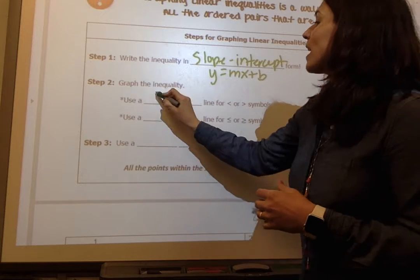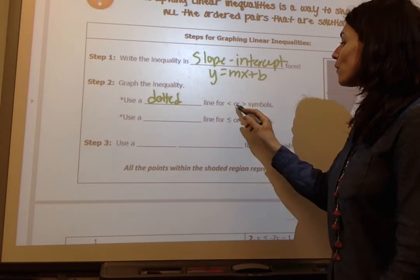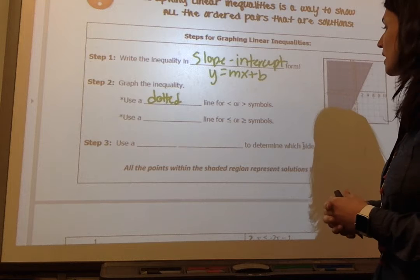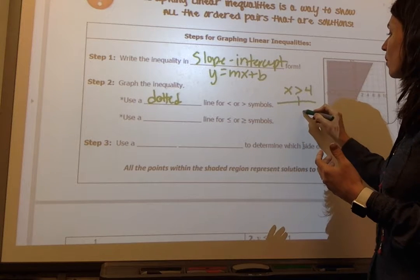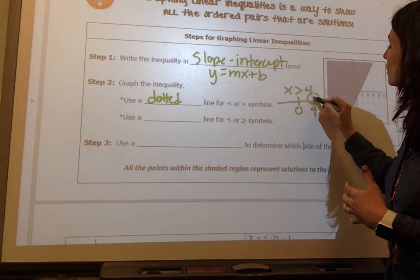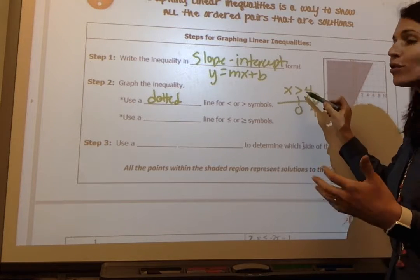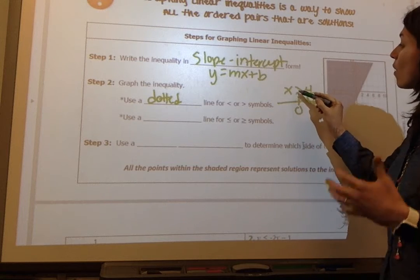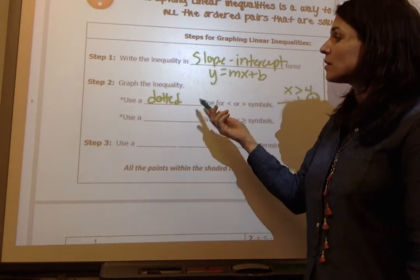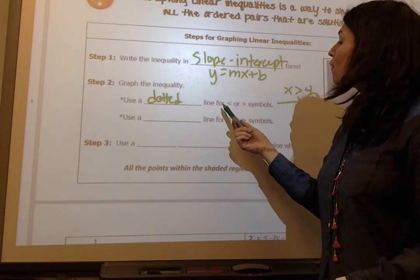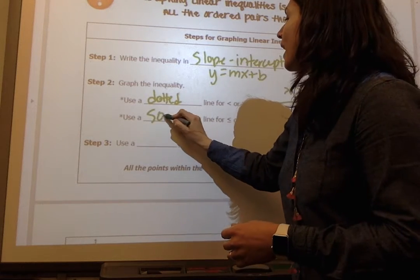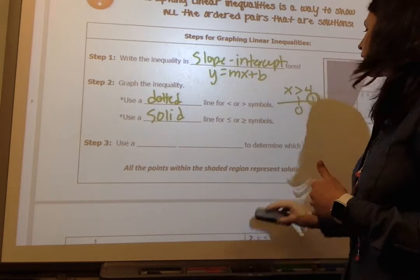Step 2, when we graph the inequality, we use a dotted line for less than or greater than symbols. And I want to refresh your memory. Remember in your notes earlier on when we did inequalities, for example, we had x is greater than 4, and we graphed them on a straight line. Here was 0 and here's 4. When we had greater than and less than, we did an open circle. And we did an open circle because we know x is greater than 4, x isn't 4. So 4 cannot be a solution to this. That's why we used an open circle. Well, it's very similar when we use lines of inequalities. We use a dotted line for less than or greater than because points on the line are not part of the solution. We use a solid line for less than or equal to or greater than or equal to symbols.